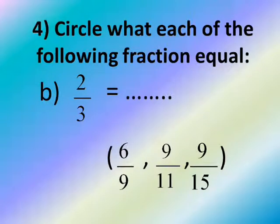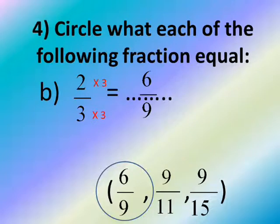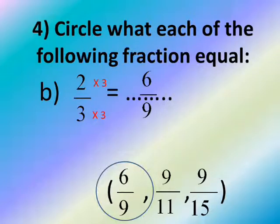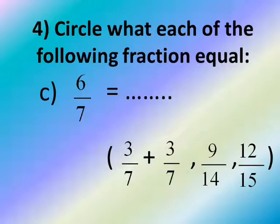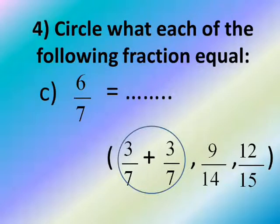2 over 3 equals — solve the multiple choice. Does 2 over 3 equal 6 over 9? Try multiplying by 3: 2 times 3 equals 6, and 3 times 3 equals 9. So 2 over 3 equals 6 over 9 — the first choice. Number C: 6 over 7 equals — try 3 over 7 plus 3 over 7. Addition: 3 plus 3 equals 6, so 6 over 7. The answer is the first choice.